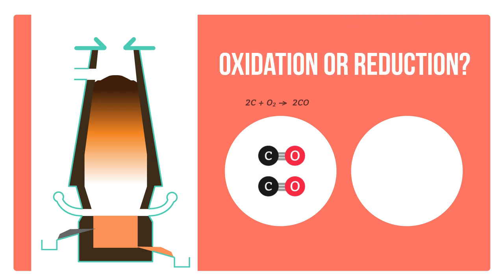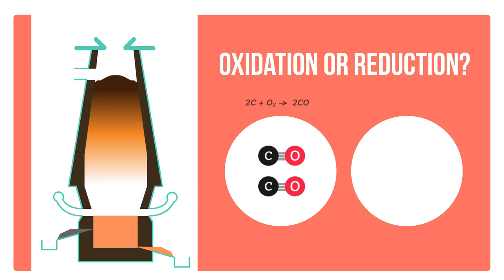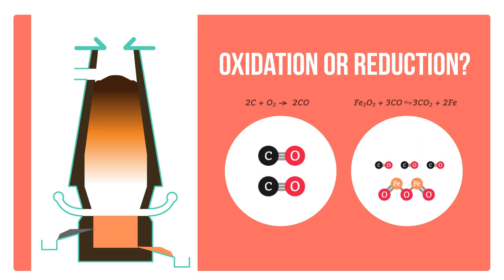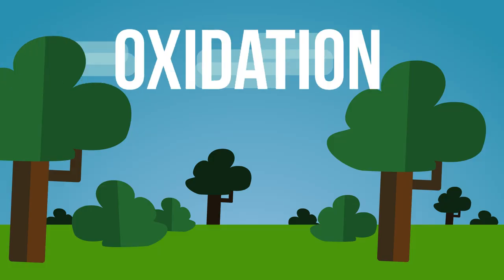Is the formation of carbon monoxide an oxidation or a reduction? Pause the video to work it out. Oxygen is gained by carbon to form carbon monoxide, so this is an oxidation reaction. The carbon monoxide then reacts with the iron to release pure iron metal. Simultaneous oxidation and reduction takes place: iron loses oxygen and is reduced, while carbon monoxide gains oxygen and forms CO2 — it is oxidized.